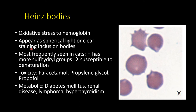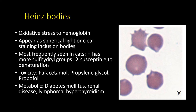Heinz bodies are due to oxidative stress to hemoglobin. They appear as spherical, clear or light-colored inclusion bodies — in contrast to the darker basophilic stippling. They are frequently seen in cats, whose hemoglobin is very susceptible to oxidative stress. Heinz bodies may be seen in cats in episodes of paracetamol, propylene glycol, or propofol toxicity, which denatures their hemoglobin, and in metabolic conditions such as diabetes mellitus, renal disease, lymphoma, and hyperthyroidism.